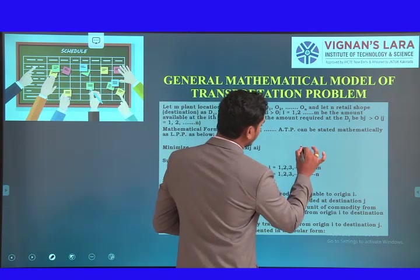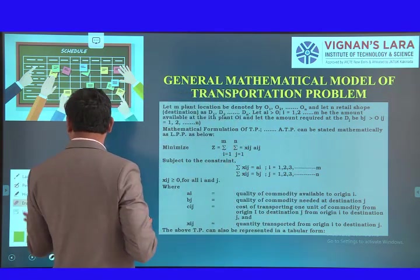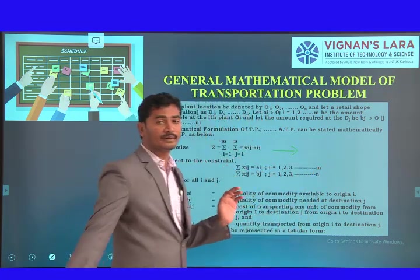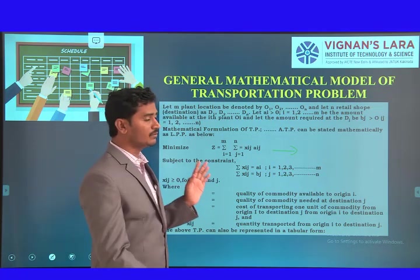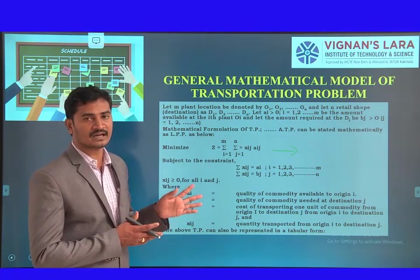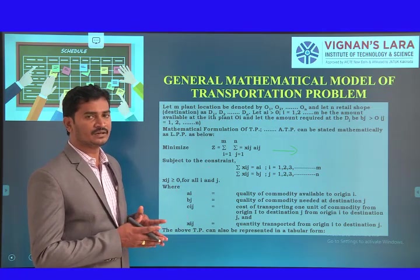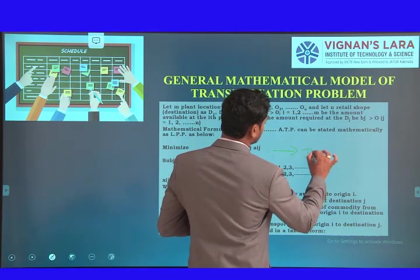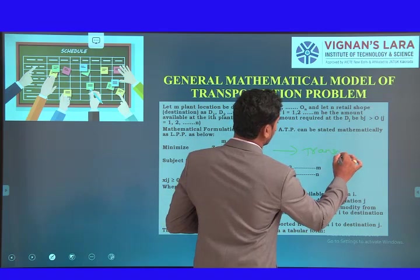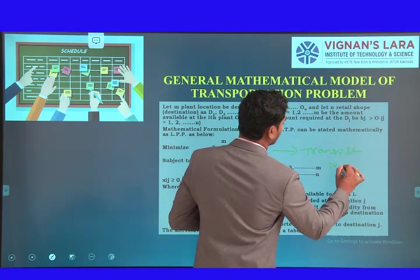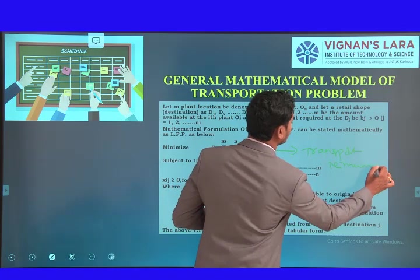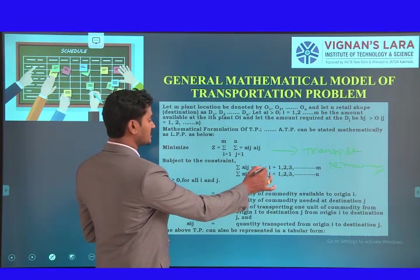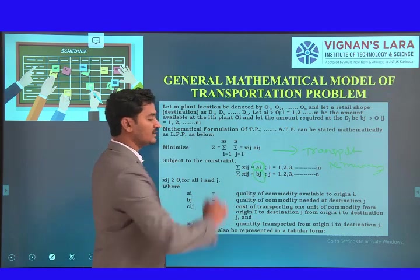What we must remember: the objective function is always of minimization type, because we are considering the transportation cost as the objective function. The goal is to minimize the transportation cost, so the objective is always minimization. The constraints are supply and demand — those are the two types of constraints in the transportation problem.